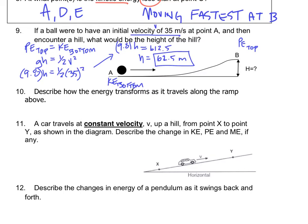Number ten: describe how energy transforms along the ramp. At the bottom, the ball has maximum kinetic energy and is moving fastest. As it moves up the ramp, it gains height and slows down — kinetic energy decreases and potential energy increases. So the energy transformation is from kinetic energy to potential energy.